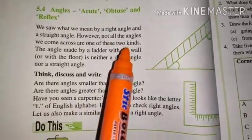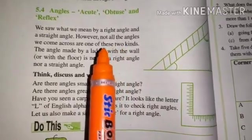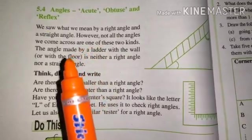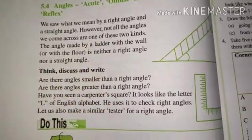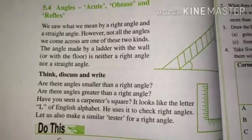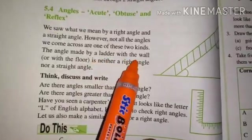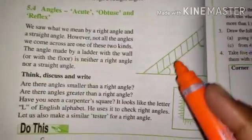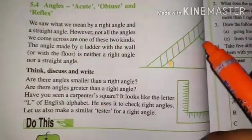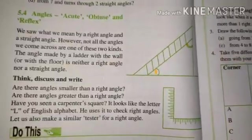Yaha par likha hai, not all the angles we come across are one of these two kinds. Yani ki, zaroori nahi ki sare angles acute angle ya right angle aur straight angle. Kuch aise bhi angles hote hain jo acute, obtuse ya reflex bante hain. Jaise the angle made by ladder with a wall. Yani ki jo hum ladder lagate hain wall par, toh jo angles bante hain, ye dono angles acute angles hote hain.